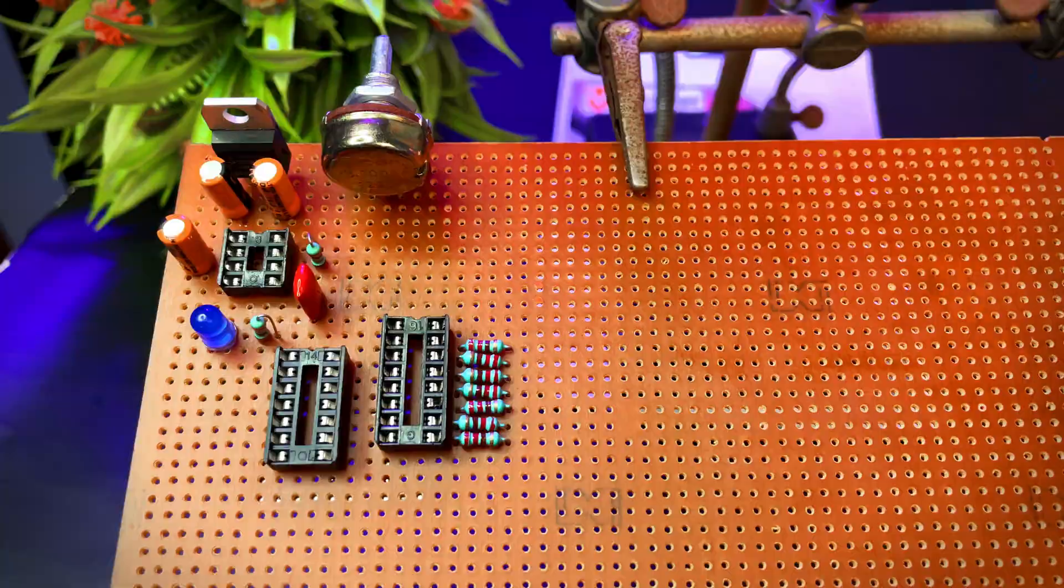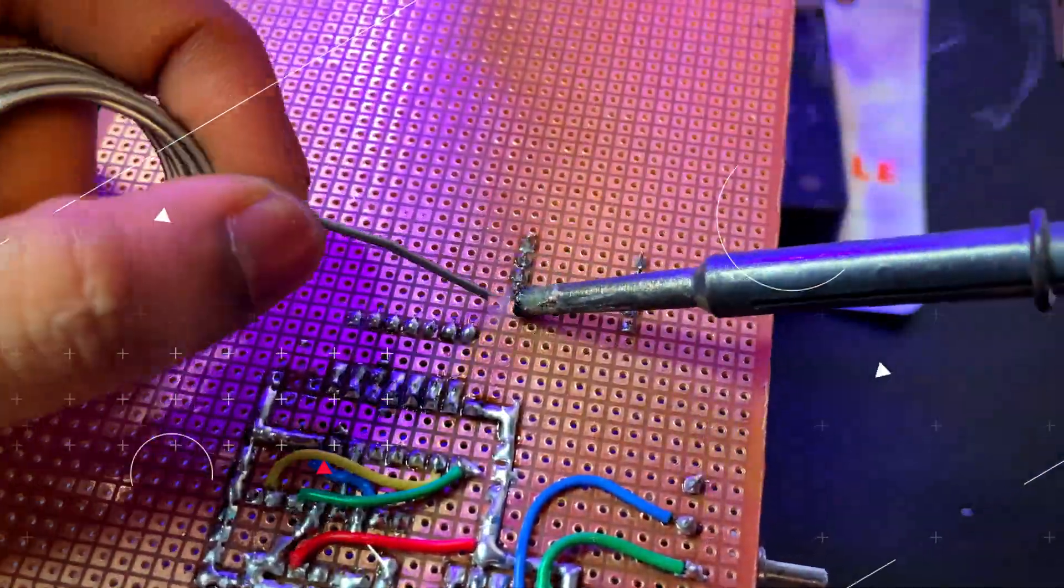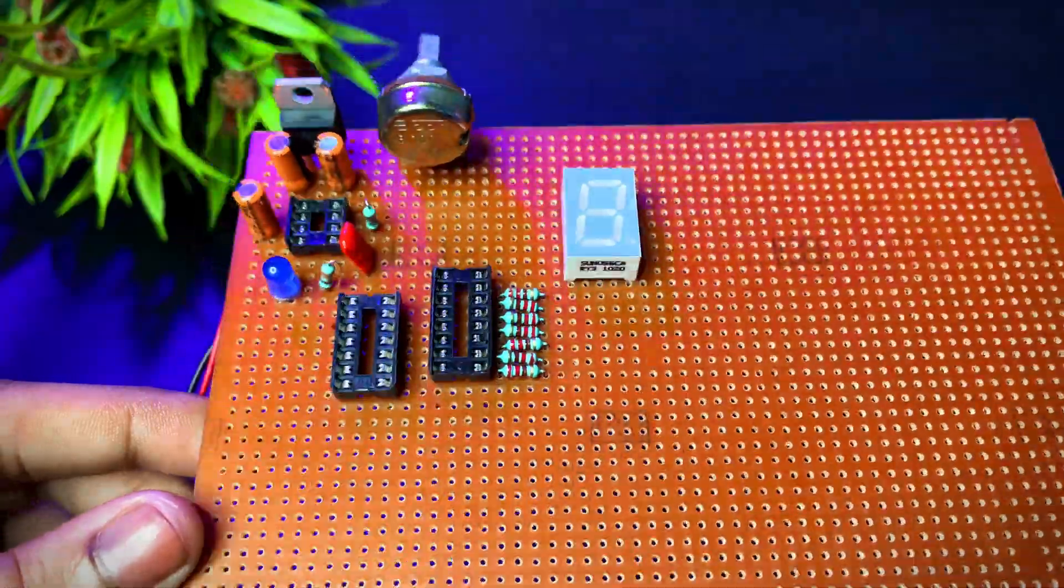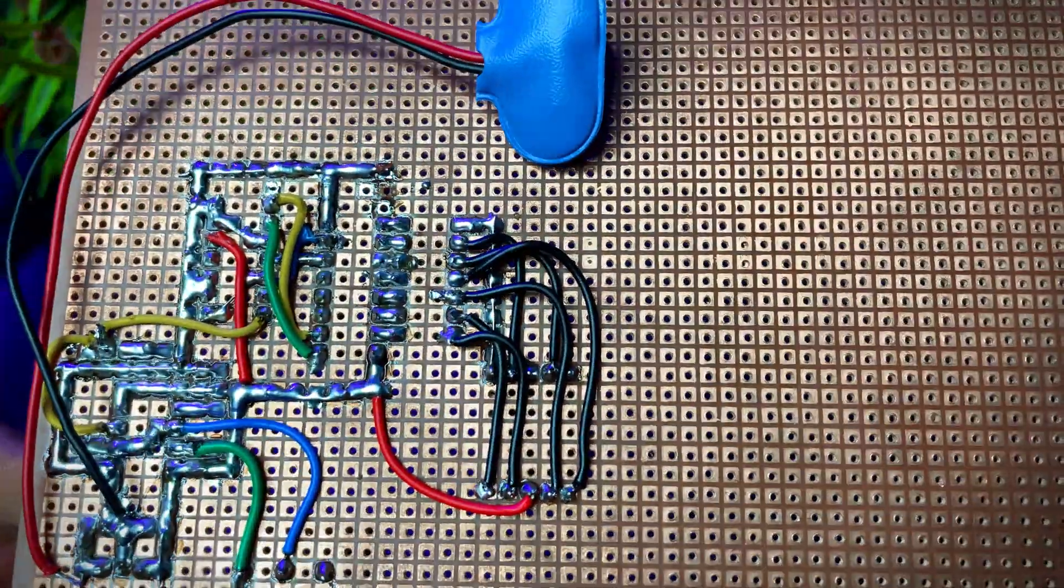Pin A, B, C and D. Now I am placing the 7 segment display and soldering it. Finally, I connected the 7447 output to the 7 segment display. Make sure it's common anode display.